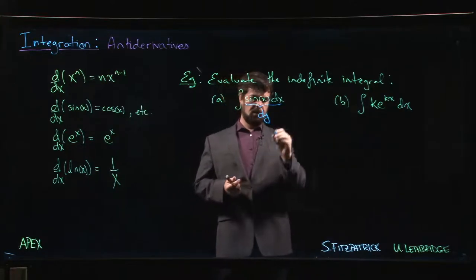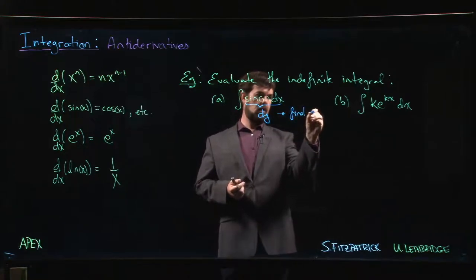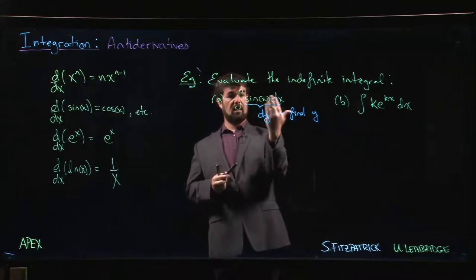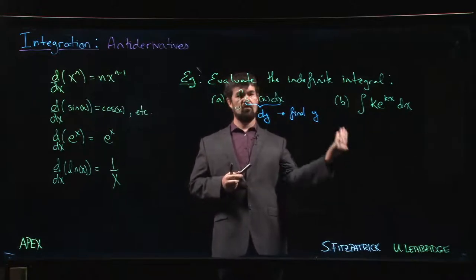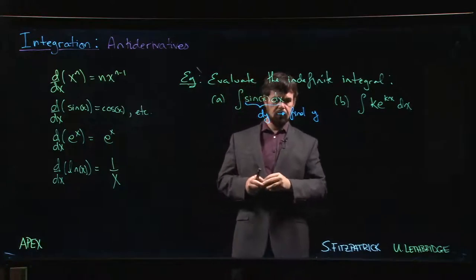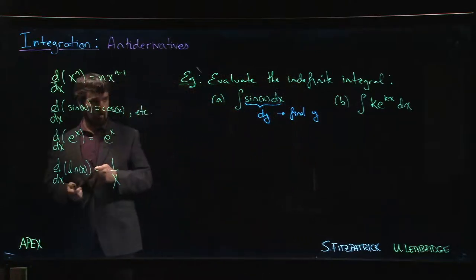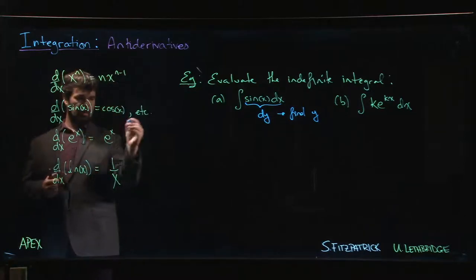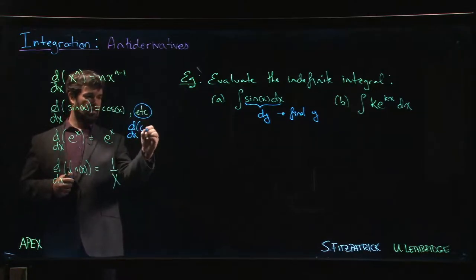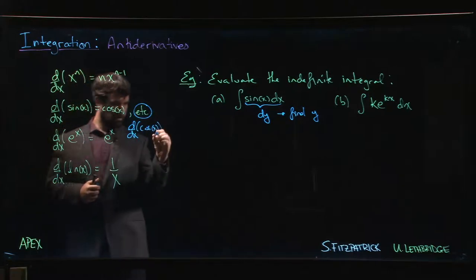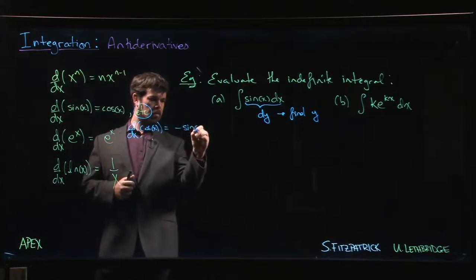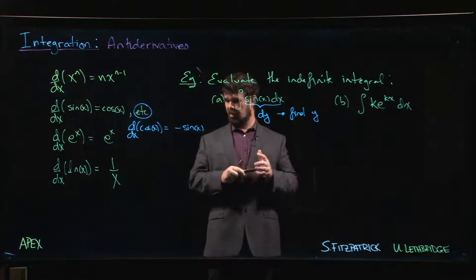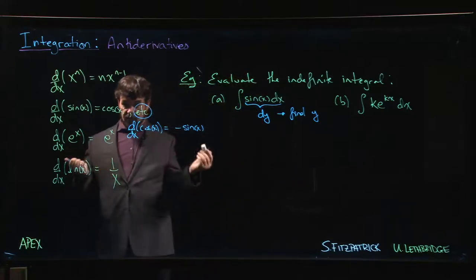In other words, we're trying to find the function whose derivative is sin(x). We still have some of these derivatives over here at the board. We know that the derivative of sine is cosine, and the derivative of cosine is negative sine. That's almost what we want, we're just off by a minus sign.